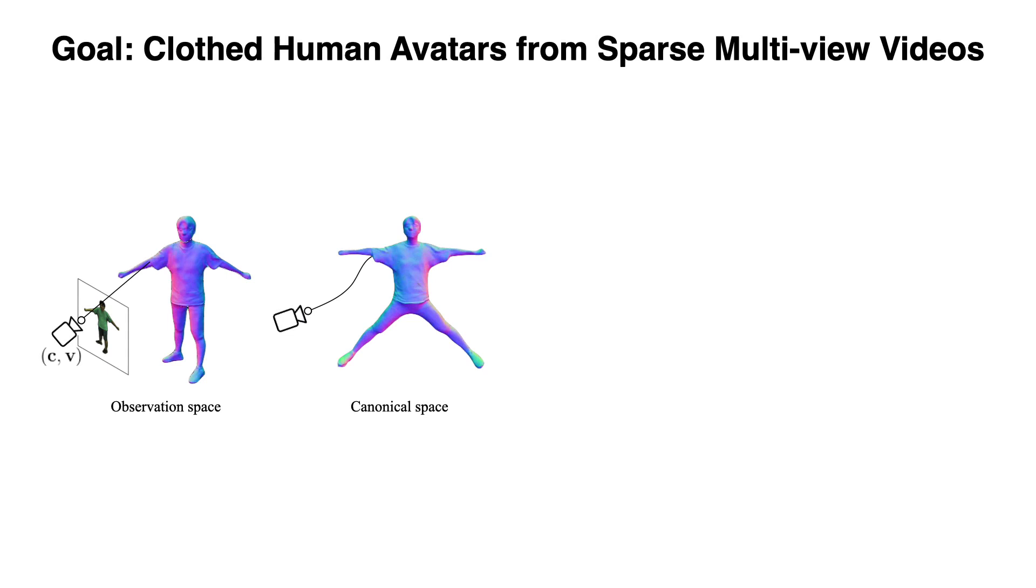Given a camera array in observation space and an SDF function in canonical space, we first utilize simple skinning weights to do coarse sphere tracing in both observation space and canonical space to search for a near surface point as initialization.